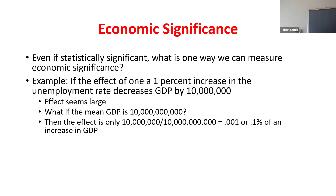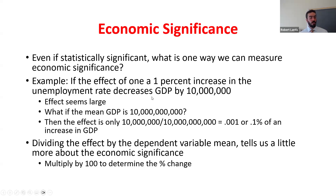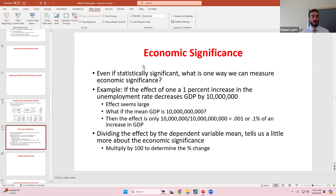This is one way we can measure economic significance - it's the ratio of our slope coefficient to the mean of whatever Y variable we're trying to predict. Dividing by the mean of the dependent variable is one way we can determine economic significance. Usually we convert that to a percent - so here, 0.001 is only a 0.1% change relative to the mean of that GDP variable.